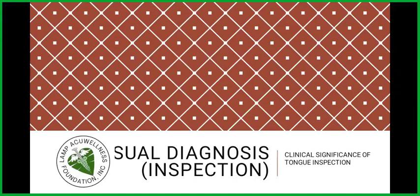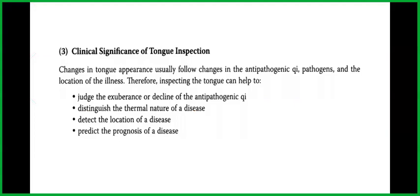Let's go to visual diagnosis: clinical significance of tongue inspection. Changes in tongue appearance usually follow changes in the antipathogenic qi, pathogens, and the location of the illness. Therefore, inspecting the tongue can help to judge the exuberance or decline of the antipathogenic qi, distinguish the thermal nature of disease, detect the location of a disease, and predict the prognosis of a disease.